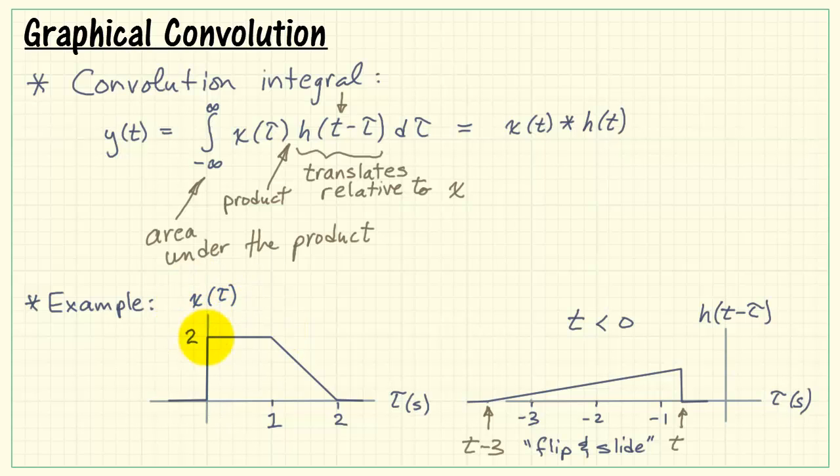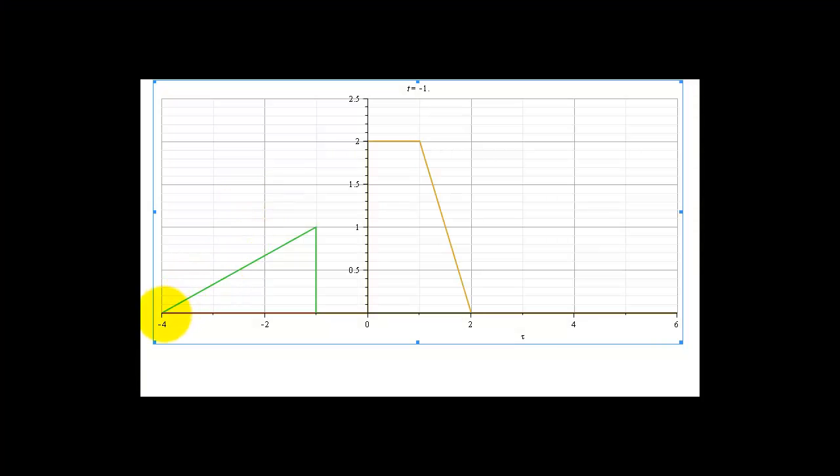All right, let's then consider that we are forming the product of x and this modified version of h. And let's visualize that product specifically. Here's my translated version of h. Here's the input x. The red trace is going to show the product of these two curves, and you can also look at the top to see the actual time. So the red curve, then, is the product of these two waveforms. Here you'll note that we have the product of two ramp shapes, and that's giving us a parabolic shape on the red trace.